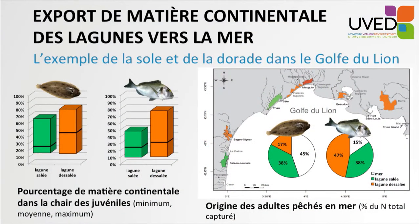We were able to show, as you can now see from this map and the pie charts on the right-hand side, that in both cases lagoons had played an essential role for the constitution of the species fished in the sea. For the sea bass, only 15% of individuals who survived to become adults had grown in the sea, and the majority had grown in low-salinity lagoons. Whereas for the sole, the flat fish, the lagoon had also played an essential role: 55% of the fishes had grown in lagoons, but in this case in lagoons with highly saline water.